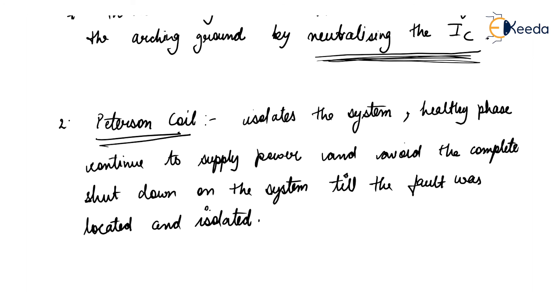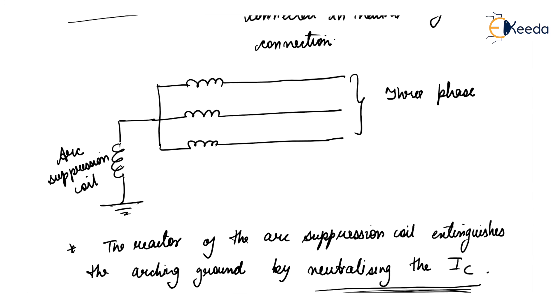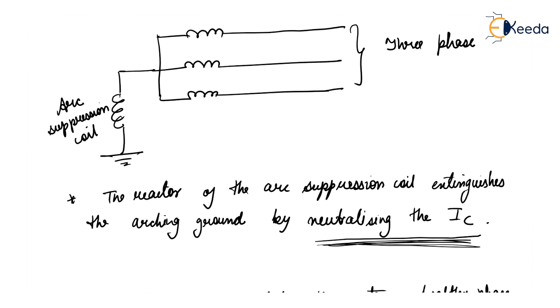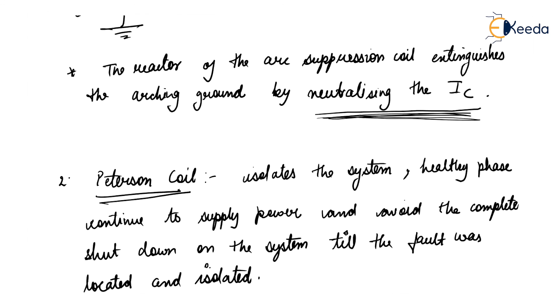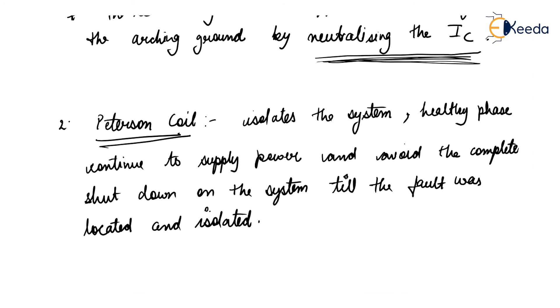The healthy phases continue to supply power and avoid the complete shutdown of the system till the fault was located and isolated. So these are the two methods of arcing ground. Thank you.